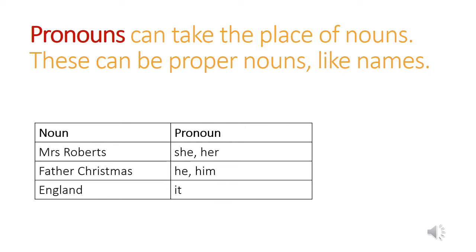Remember, a noun is a person, a place or a thing. We use nouns a lot in our speech and also our writing. Sometimes we use them too much, and so to avoid repetition we could use a pronoun instead. The pronouns you should have put in the table would have been she and her for Mrs Roberts, he and him for Father Christmas, and it for England.